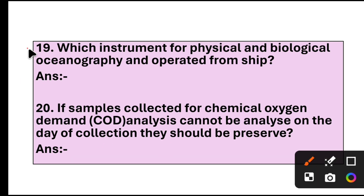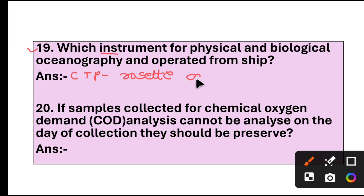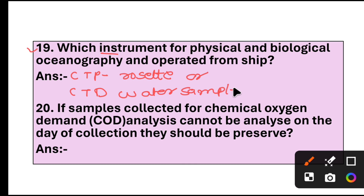Question 90: Which instrument is used for physical and biological oceanography and operated from a ship? Answer: CTD Rosette or CTD water sampler. Question 20: If samples collected for chemical oxygen demand (COD) analysis cannot be analyzed on the day of collection, they should be preserved in...